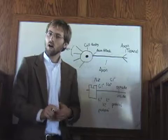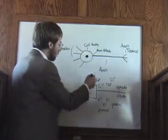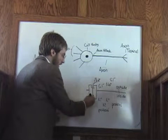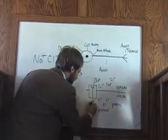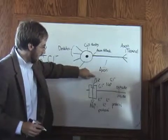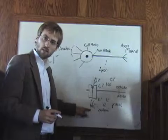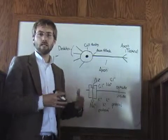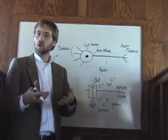To turn it on, we need the inside to become more positive. The sodium is going to go through special proteins called channels that provide a path for it through the membrane. So the sodium goes from being on the outside through the channel into the inside, making the inside more positive. When a bunch of sodium comes in, the inside becomes much more positive. That's how the neuron knows that it's on.